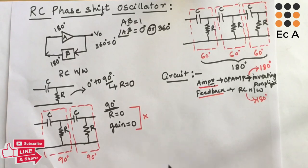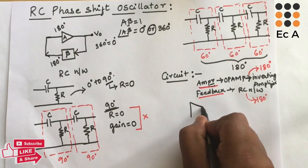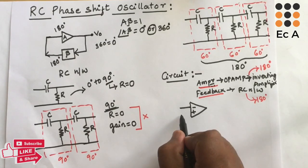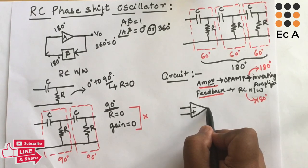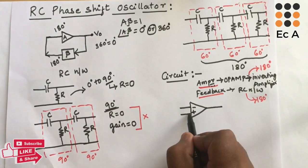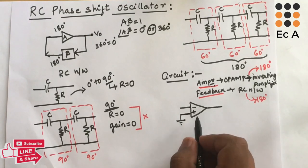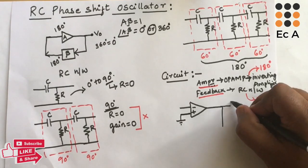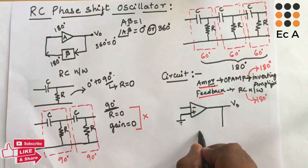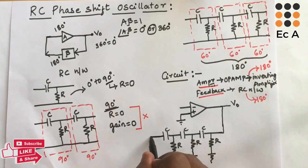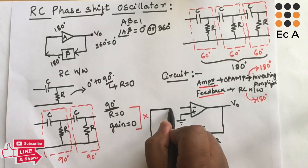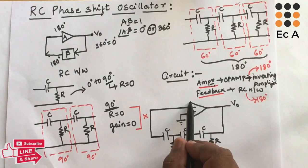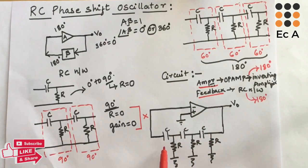Let us draw the circuit. We take an op-amp with inverting and non-inverting terminals — the negative sign indicates the inverting terminal and the positive sign the non-inverting terminal. The non-inverting terminal is connected to ground. The output of the op-amp is given as input to the RC network, and the output of the RC network is fed back to the inverting terminal of the op-amp. This is the circuit of the RC phase shift oscillator.